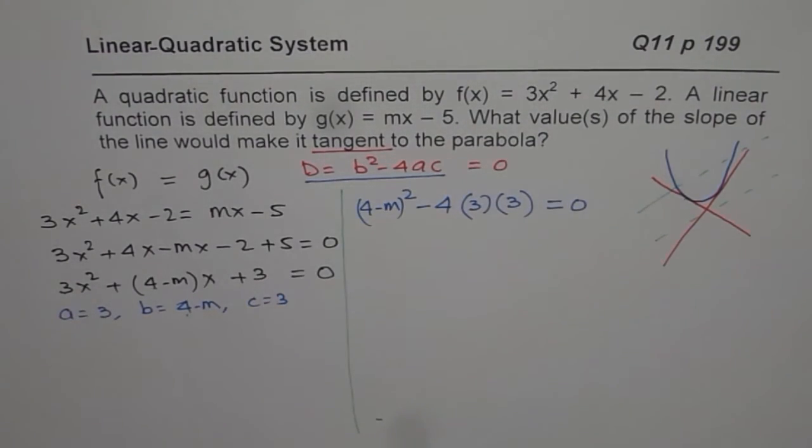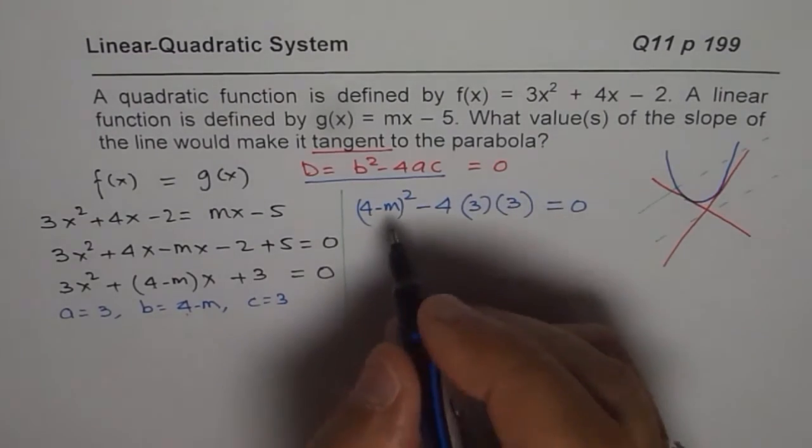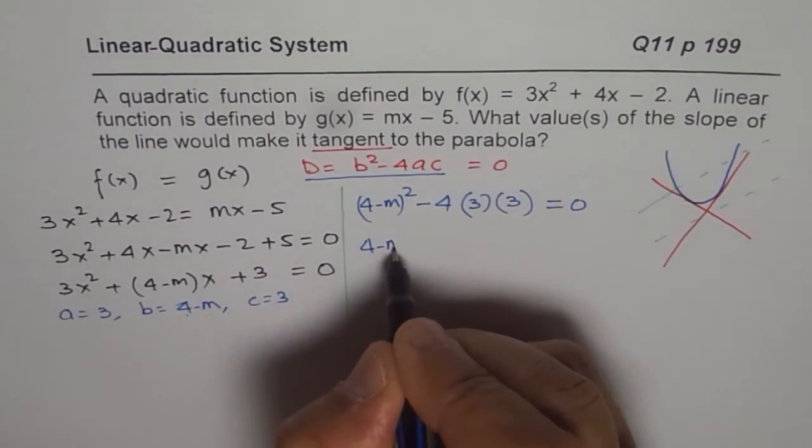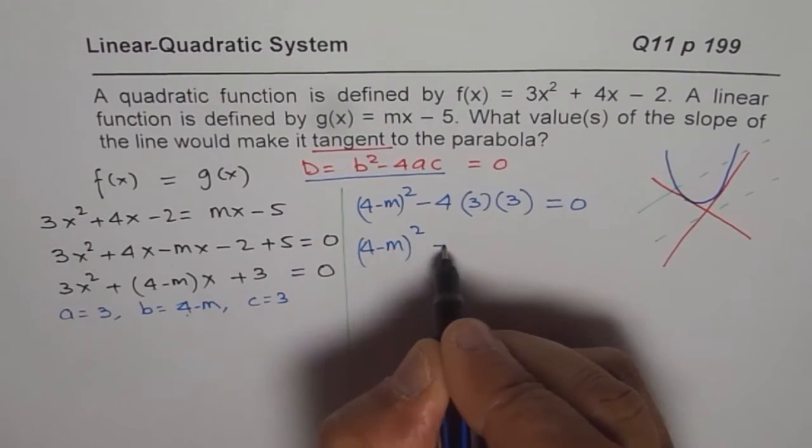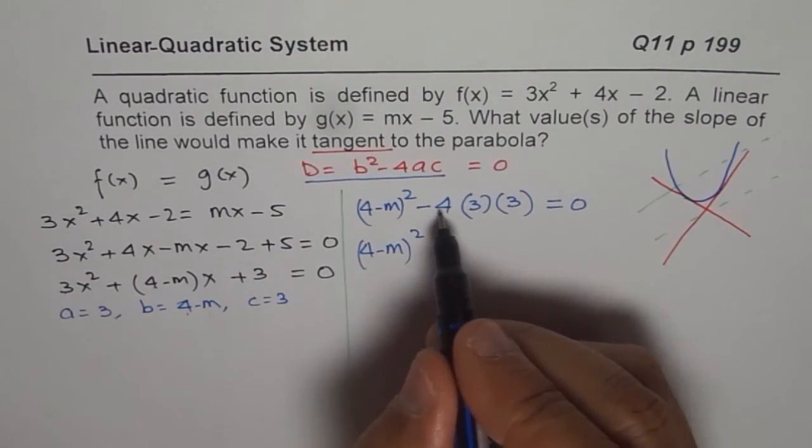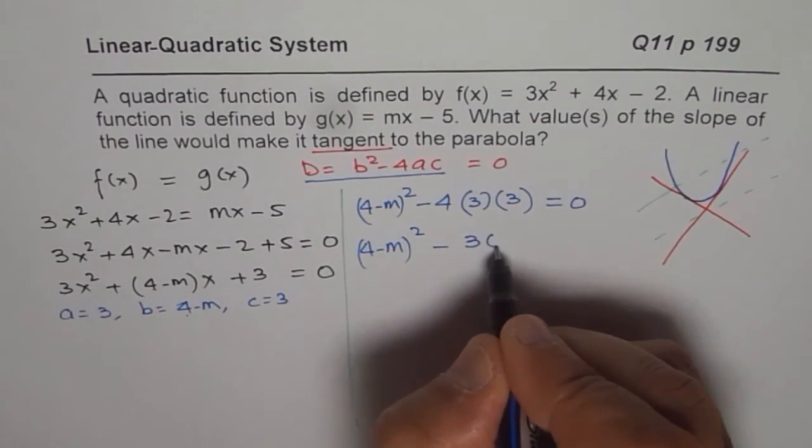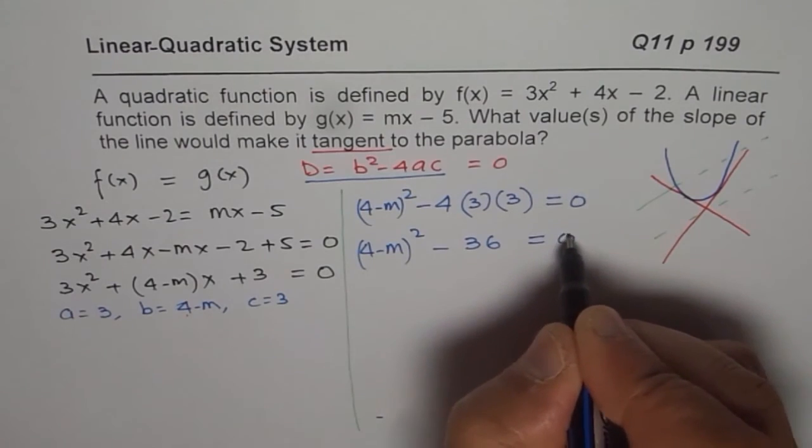That should be equal to 0 for this condition to be true. That we are looking for a tangent to the parabola. So what we get here is 4 minus m whole square. And this is 3 times 3 is 9. 9 times 4 is 36 equals to 0.